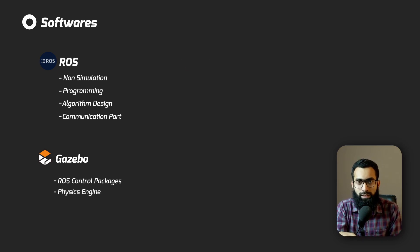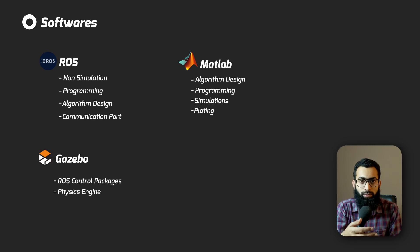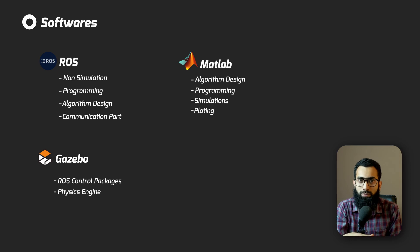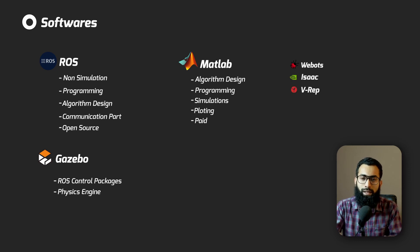Similar is the case with MATLAB — it is for algorithm design. It has a lot of programming, simulations, and plotting mechanisms for visualization. The plots in MATLAB are part of MATLAB itself, which is why it is sort of paid, while ROS is open source. Similarly, VBots, NVIDIA ISAAC, and VREP all have built-in programming and simulation. But in ROS and Gazebo, there is this difference.